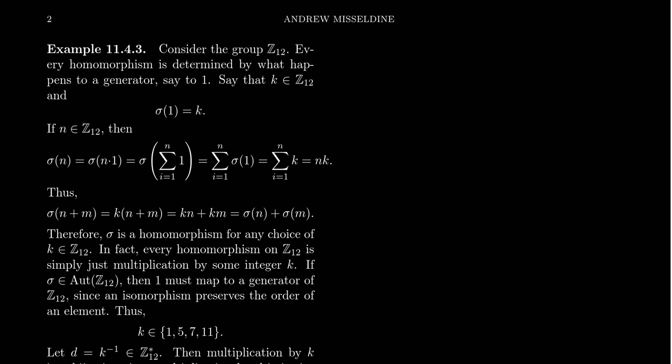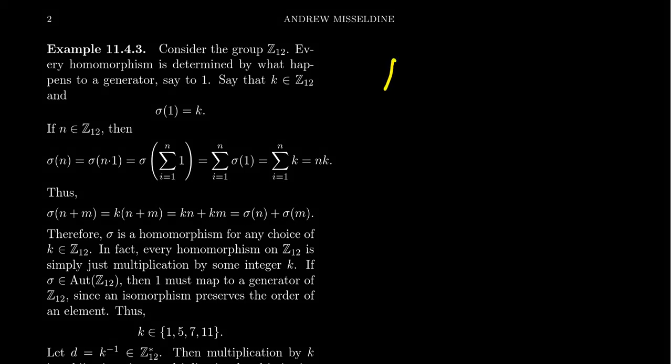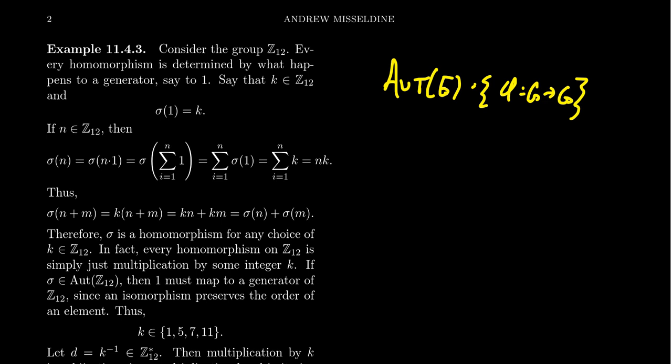In this video, I want to talk about the automorphism groups of abelian groups. We defined the automorphism group in the previous video. Remember, Aut(G) is the collection of all automorphisms of G. These are isomorphisms phi from G back into itself — they're bijective permutations.